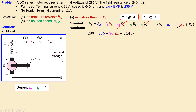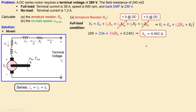Substituting the values — armature current is 36 amperes, back EMF is 236 volts, terminal voltage is 280 volts, and R_F is 0.240 ohms — we solve for R_A and get 0.982 ohms. That is the answer to question A.